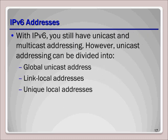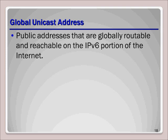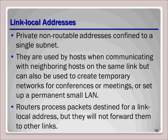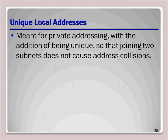One thing that is quite different with IPv6 is the different addresses used on the same host. Instead of having a single address, a host can have a global unicast address, a link local address, and a unique local address. A global unicast address is a public address that is globally routable and reachable on the IPv6 portion of the internet. The link local address is a private, non-routable address confined to a single subnet, used when communicating with neighboring hosts on the same link, or to create temporary networks for conferences or set up a small permanent LAN — routers will not forward link local packets to other links. A unique local address is meant for private addressing with the addition of being unique, so that joining two subnets does not cause address collisions.